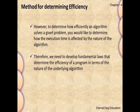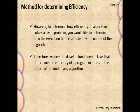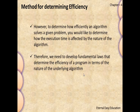To determine how efficiently an algorithm solves a given problem, we need to determine how the execution time is affected by the nature of the algorithm. One type of algorithm will take more time; another will take less time — it depends on the methodology of how the algorithm is defined. Therefore, we need to develop fundamental laws that determine the efficiency of a program in terms of the nature of the underlying algorithm.